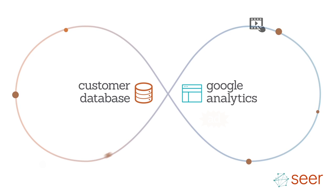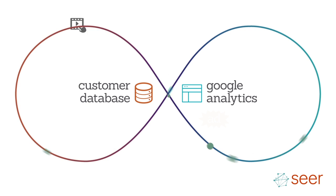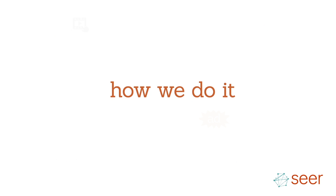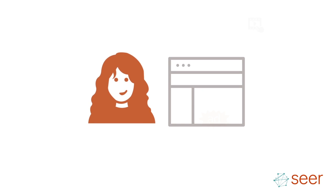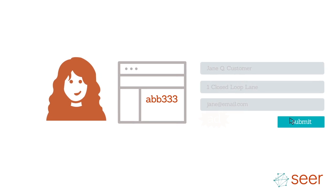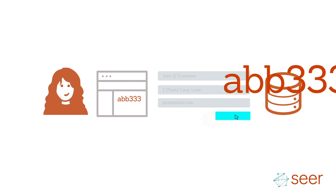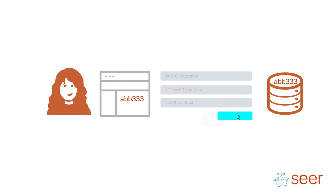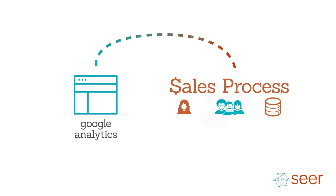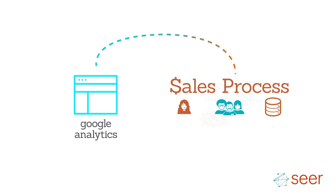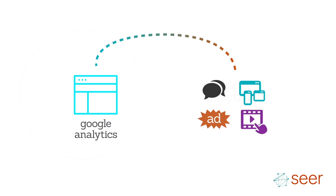Closed-loop analytics ties the visitor behavior from Google Analytics with the lead and sales information in your customer database. Here's an example of how we do it. When a customer first lands on your website, Google Analytics sets a cookie on their browser containing a unique ID. When the customer submits a contact form, it triggers the creation of a lead record with the unique ID in your customer database. Then, with closed-loop analytics, at every step in the sales process, an event is triggered sending update data back to Google Analytics. Now, we can see what channels, website content, and other marketing efforts are associated with quality leads and even sales.